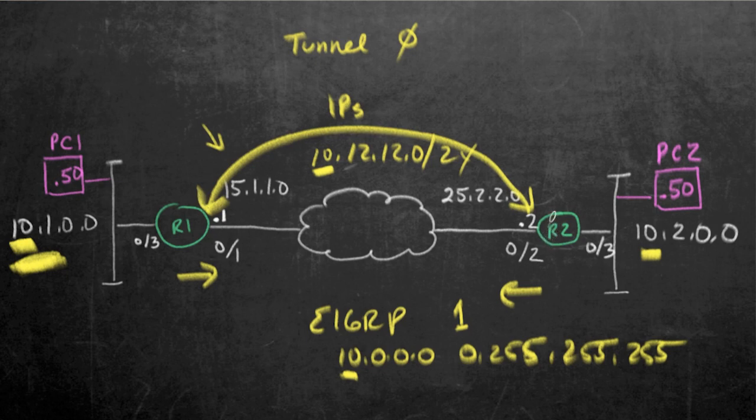We don't want to cause recursive routing where R1 thinks that to get to the other end of the tunnel, it uses the tunnel itself—that's a problem. So I'm not going to include any of the public address space here in my EIGRP, just the private address space on the inside of each site and on the tunnel interface.